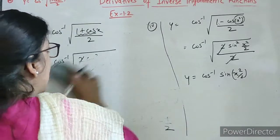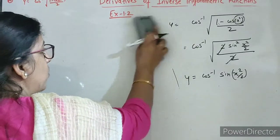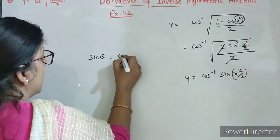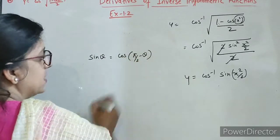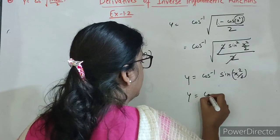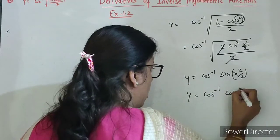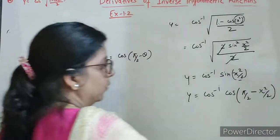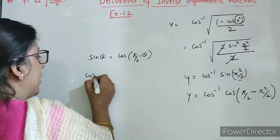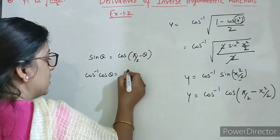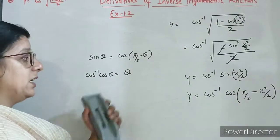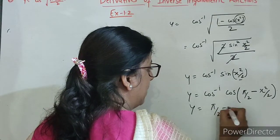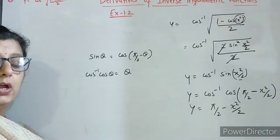So here we can write it as cos inverse cos. But here we can write it as cos of 90 minus theta. So yaha par hum likhenge cos inverse cos of pi by 2 minus theta, means x square by 2. Now which property we can use? Cos inverse cos theta is theta. So we can write pi by 2 minus x square by 2.